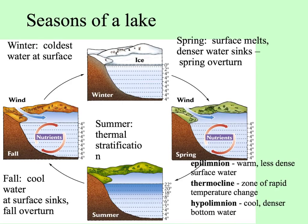We should also consider the seasons of a lake. In temperate zones, a lake may freeze over in winter at the top, with the coolest temperatures right at the surface while deeper water remains unfrozen. In spring, the sun warms the surface, denser water sinks — since ice is less dense than liquid water — and there's a spring overturn where nutrients cycle up from the bottom. In summer, thermal stratification occurs with the top of the lake much warmer than the bottom. In fall, the surface cooled by cold breezes sinks, again causing a nutrient overturn.